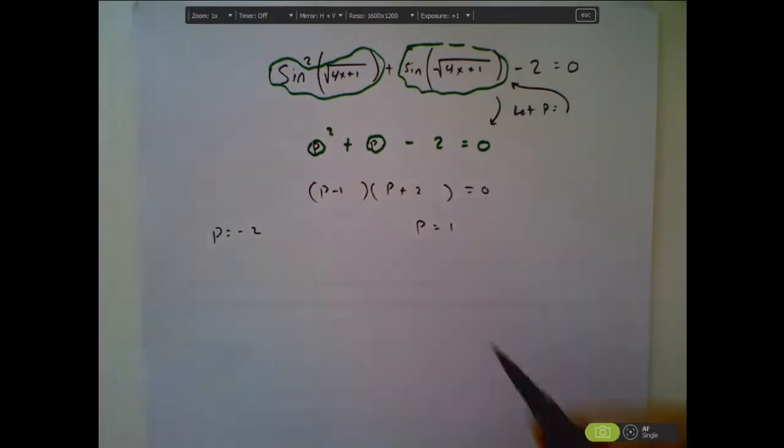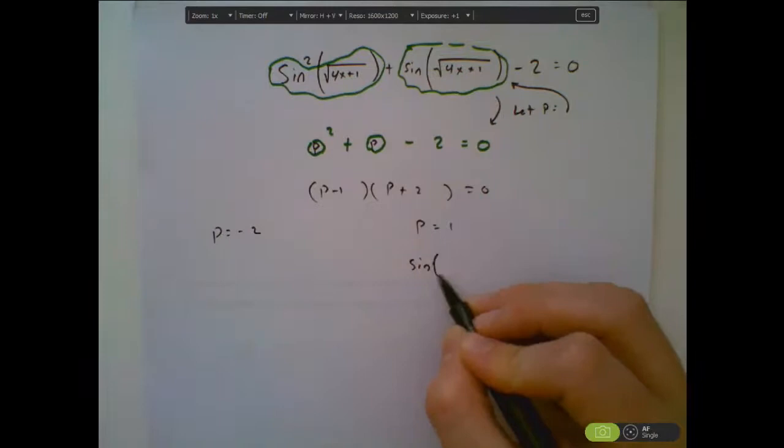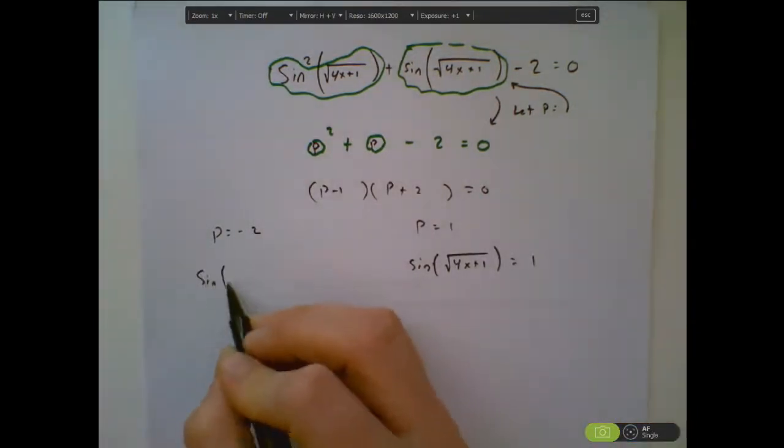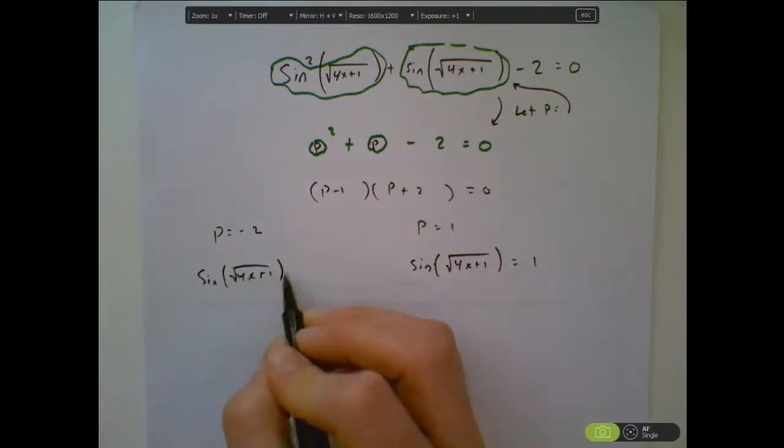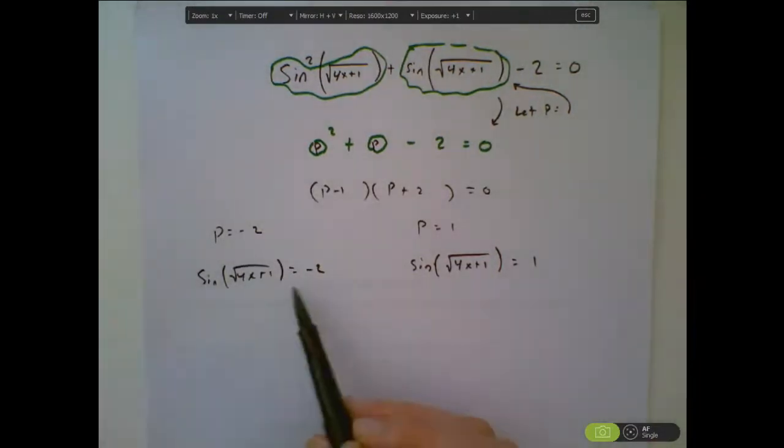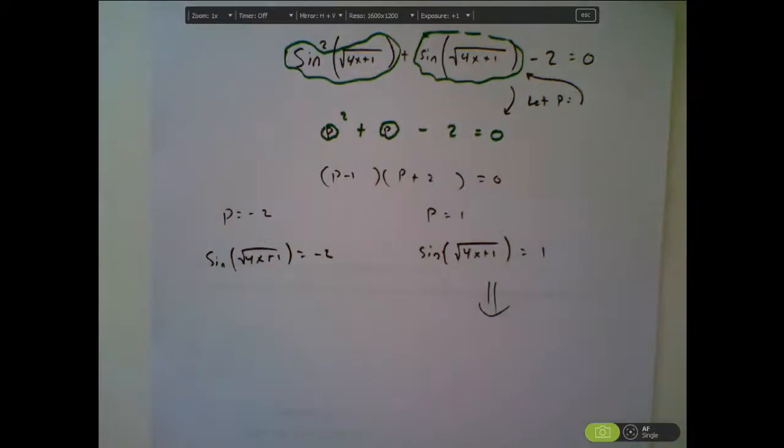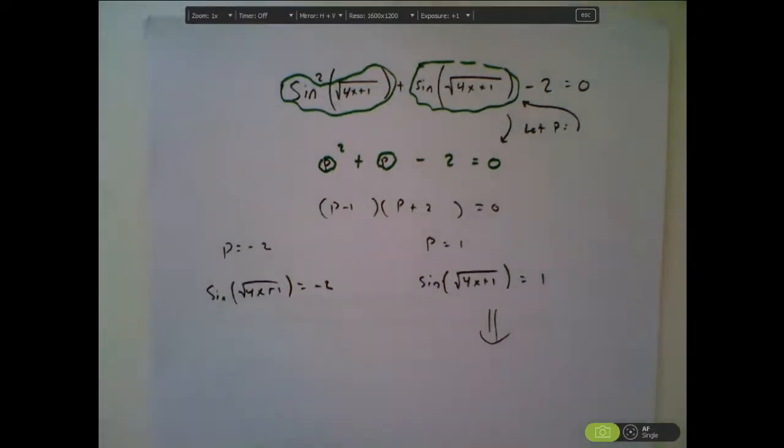So we know that either p is one or p is negative two using the zero product property. But now you substitute it back in. So sine of the business is one or sine of the business is negative two. And they can think about what would this part even mean, maybe there's not a solution there, and what would this part even mean. And they can continue solving from there. So that's one situation in which you might use blob.